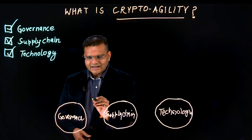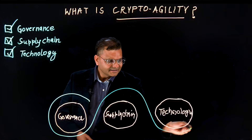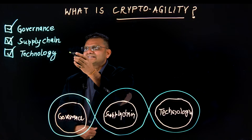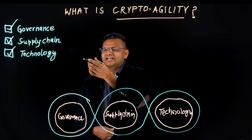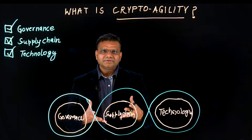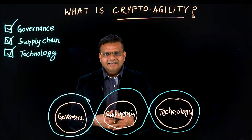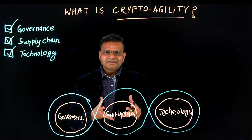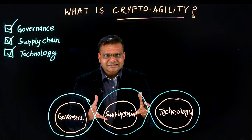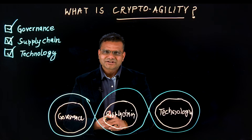Together, these three components — governance, supply chain, and technology — will enable your enterprise to develop true cryptoagility. They will allow you to create a secure environment that is flexible, compliant, and ready for the quantum-safe future.